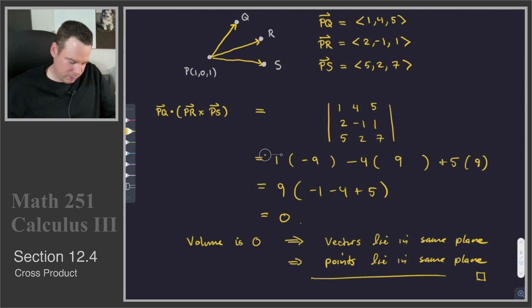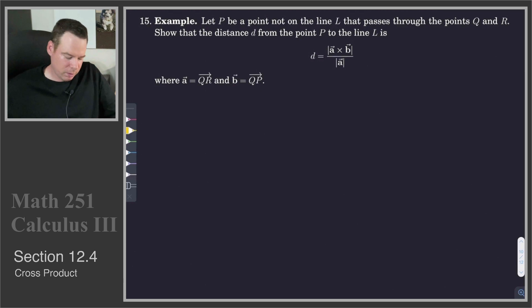Alright, let's look at one more example. This is our last example of the section of where a cross product can show its usefulness. Here we're going to let P be a point that's not on a line. And that line passes through points Q and R. What we're going to do is we're going to show that the distance from the point P to the line is given by this magnitude of a cross product. And there's some normalization happening there. So let's get a picture for this. We've got a line. We've got a line that contains points Q and R. And we have a point that's not on the line. That'll be point P.